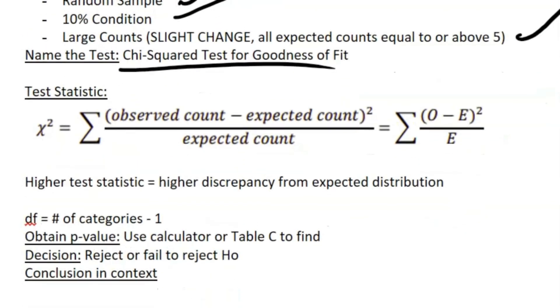Your test statistic: something cool you can know about this is that a higher test statistic means a higher discrepancy from the expected distribution, which makes sense because it is your observed value minus your expected count over your expected count, squared and summed.